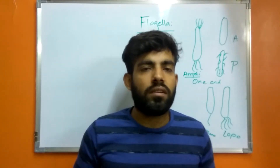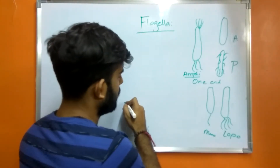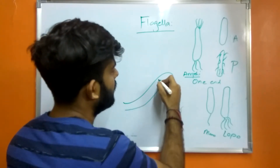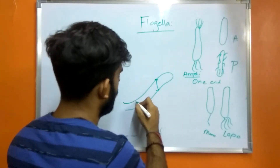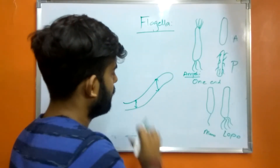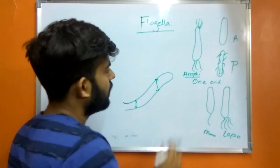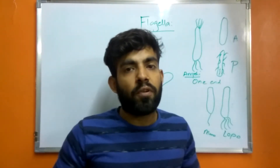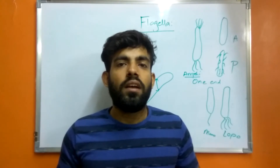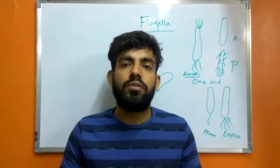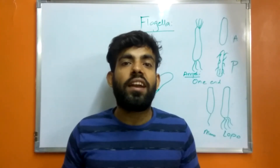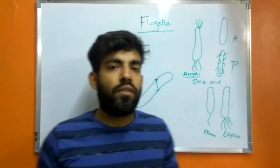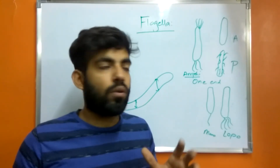The filament has a uniform diameter throughout. It is made up of a globular protein called flagellin. This flagellin forms bundles that are intertwined or twisted, forming a helix around a hollow core.